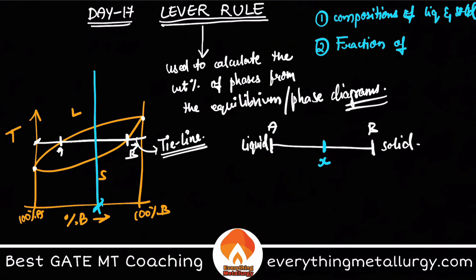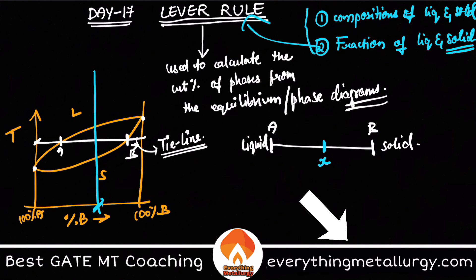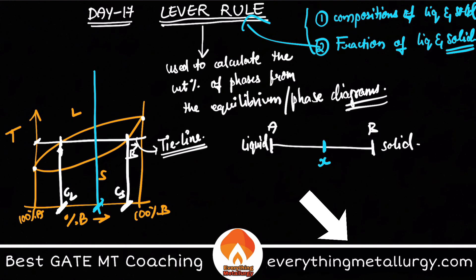Secondly, you can also calculate the fraction of the phases themselves — fraction of liquid and solid. If you want to calculate the composition, it's very simple: just draw perpendiculars to the solidus and liquidus lines. The point on the liquidus gives you CL, the composition of B in the liquid phase, and the point on the solidus gives you CS, the composition of B in the solid phase. The alloy composition is X, located between CL and CS.